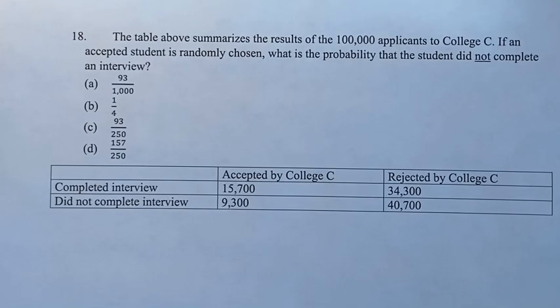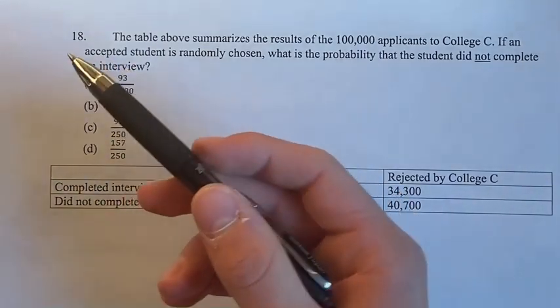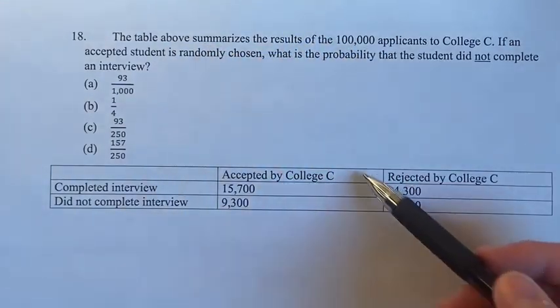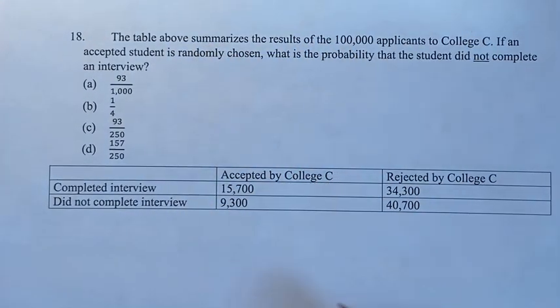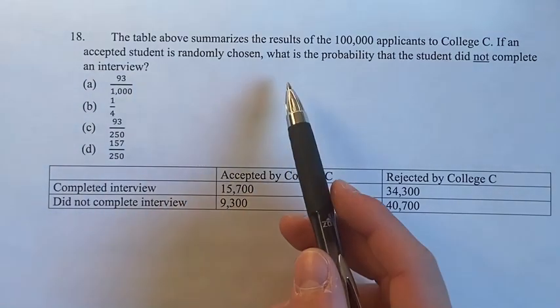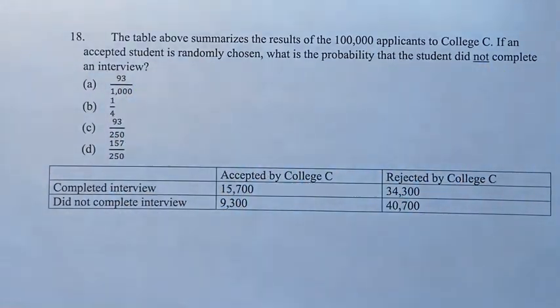Hello and welcome back to another video. In this problem, we're told the table above summarizes the results of a hundred thousand applicants to college C. We're told if an accepted student is randomly chosen, what is the probability that the student did not complete an interview?